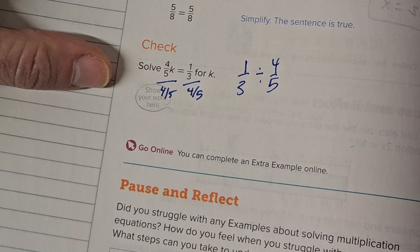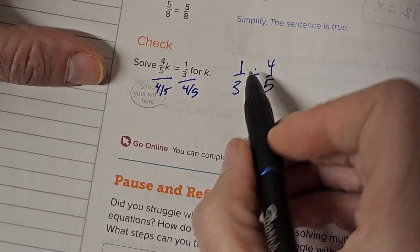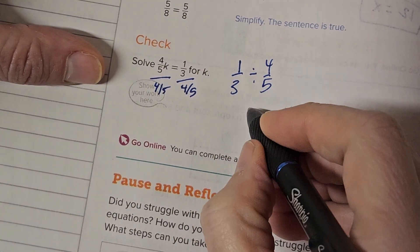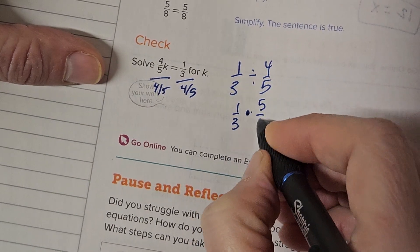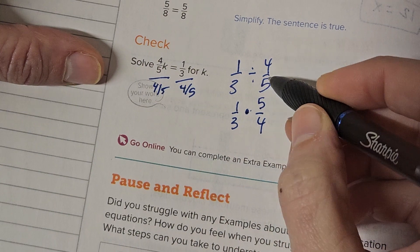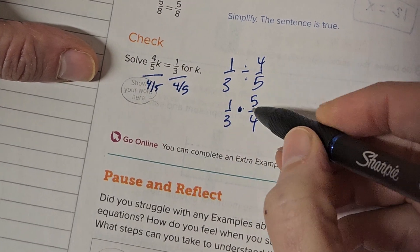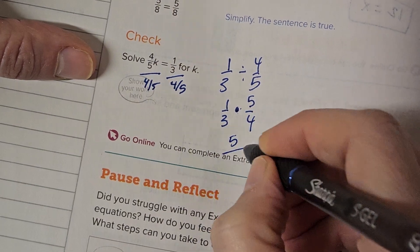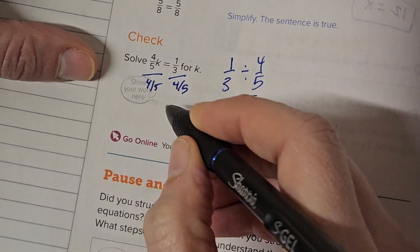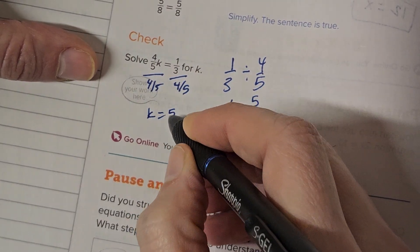What it says is 1 third divided by 4 fifths. And order matters in this case because of the standard algorithm that we learned. In order to divide fractions, you need to multiply the original by the reciprocal. This one is the one that gets reciprocated. And then multiply straight across. 1 times 5 is 5, and 3 times 4 is 12. 5 twelfths. k equals 5 over 12.